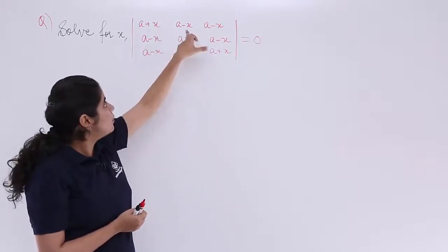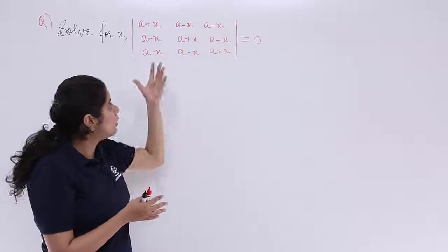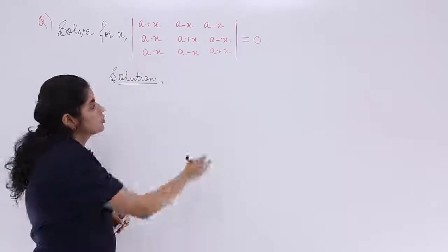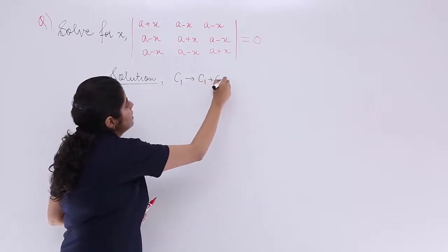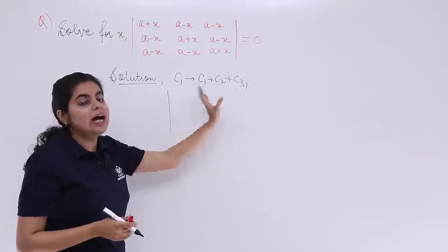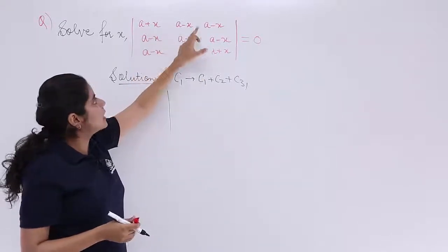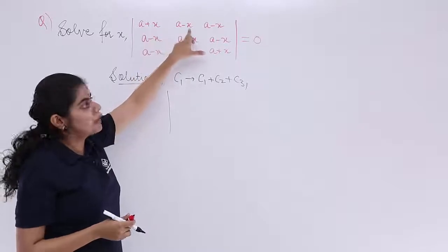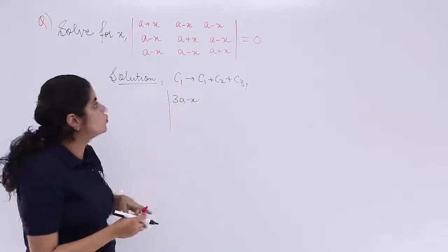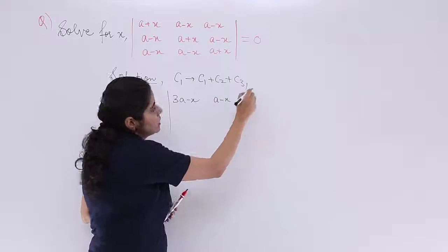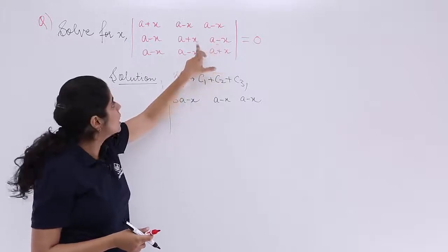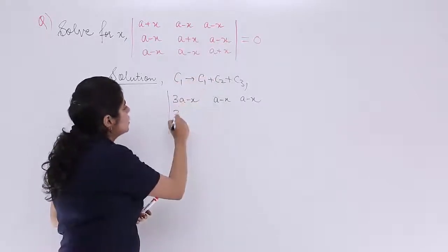That means a + x + (a − x) + (a − x): the x's cancel and we get 3a − x. I write the heading as 'Solution' and apply the operation C1 → C1 + C2 + C3. In column 1, the addition of all elements gives: a + x + (a − x) + (a − x) — the +x and −x cancel — giving 3a − x.